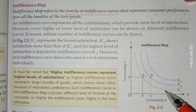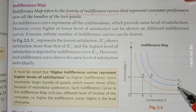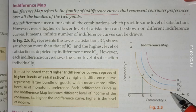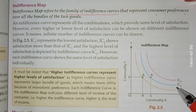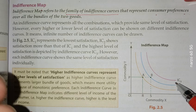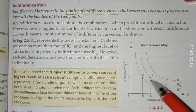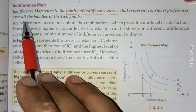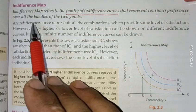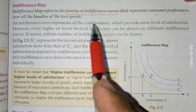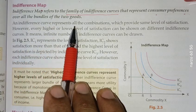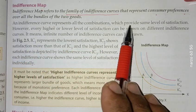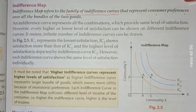IC1 is more preferable than IC2, and IC1 is more preferable than IC3. This represents the preference ordering over all the bundles of the two goods. An indifference curve represents all the combinations which provide the same level of satisfaction.